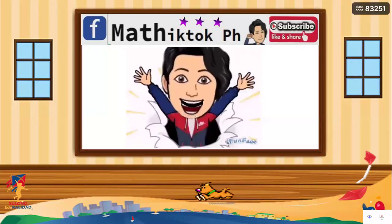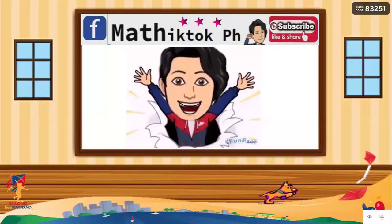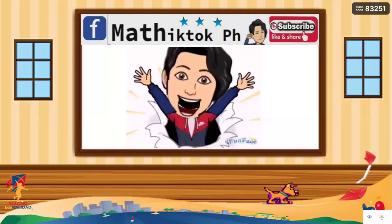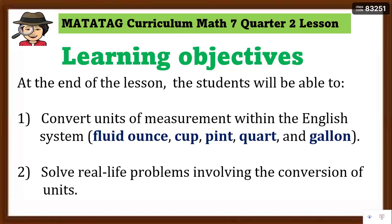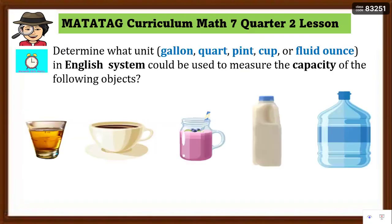Hi, good day! Hello students, welcome back to my YouTube channel. Don't forget to subscribe. Our learning objectives: at the end of the lesson, students will be able to first convert units of measurement within the English system — fluid ounces, cup, pint, quart, and gallon — and solve real-life problems involving the conversion of units. This is what Grade 7 students need to learn in the MATATAG curriculum for Mathematics Quarter 2.